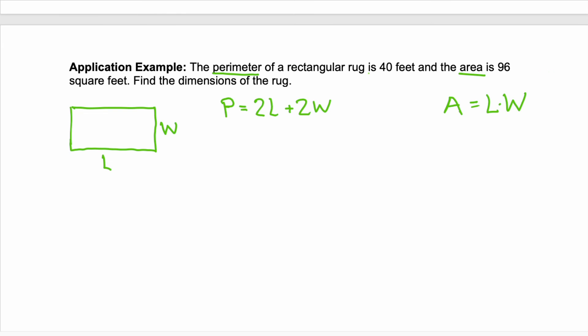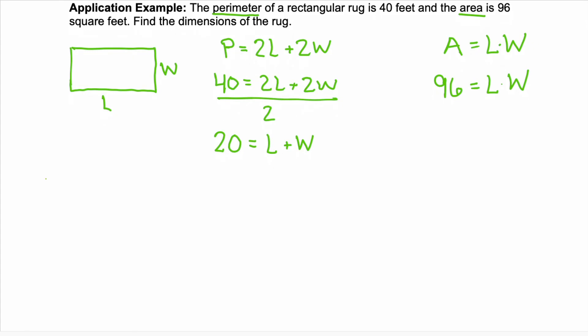I know that my perimeter is 40 feet. So 40 equals two length plus two width. Notice that they all have two in common. So we can divide by two and this is equivalent to 20 equals length plus width. We're also told that the area is 96 square feet. So 96 equals length times width. Look we have our two equations. We have 20 equals length plus width and we have 96 equals length times width.